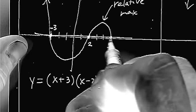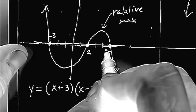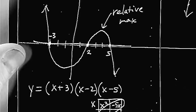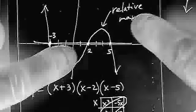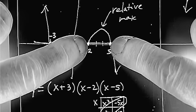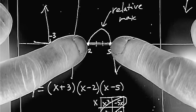And so it occurs between 2 and 5. Yes, I know that negative 3 is a zero, but it's not consecutive. I want the two zeros that are on either side of the relative max. In this case, it would be 2 and 5.